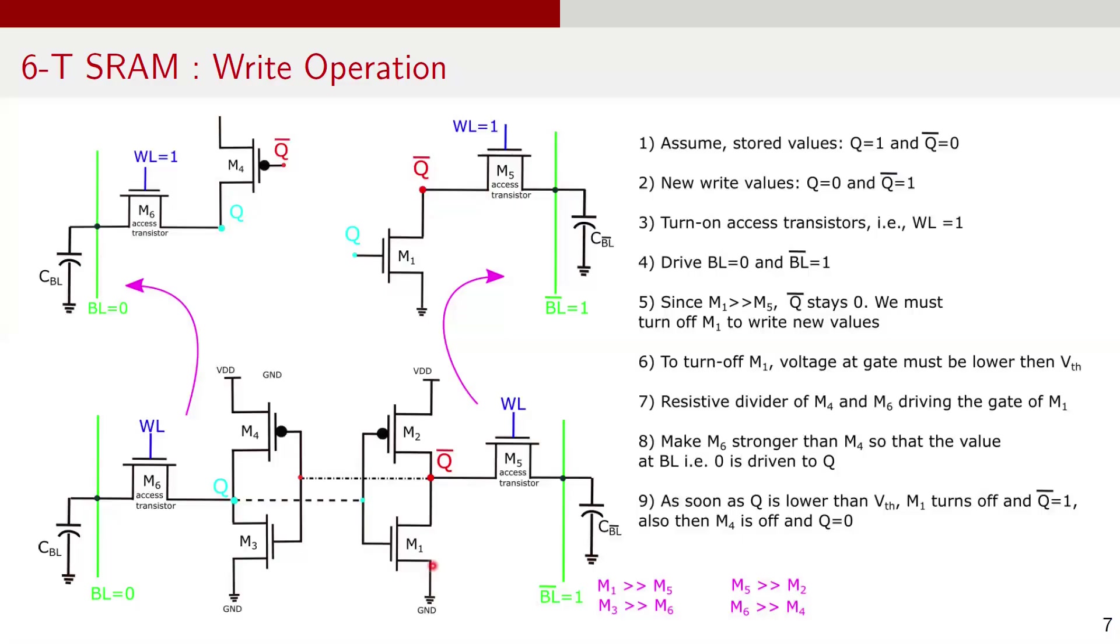Turning off M1 ensures that the previous data is overwritten, allowing the new values to be stored correctly. To disable M1, the voltage at its gate needs to drop below the threshold voltage or VTH. The gate of M1 is controlled by a resistive divider formed by transistors M4 and M6. By making M6 stronger than M4, the 0 on bitline is effectively driven to Q, helping to change the stored value. As soon as the voltage at node Q drops below the threshold voltage VTH, M1 turns off, allowing Q bar getting set to 1 and Q to 0. This completes writing Q equals to 0 and Q bar equals to 1 in the SRAM cell.